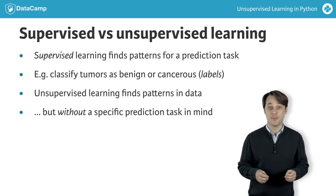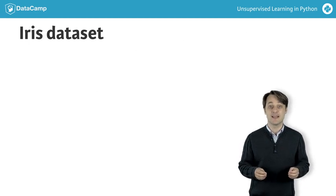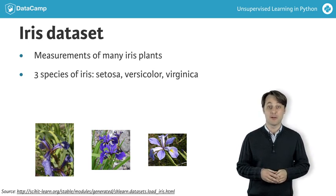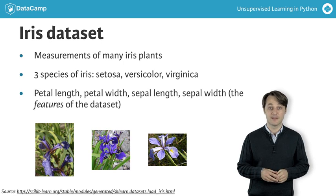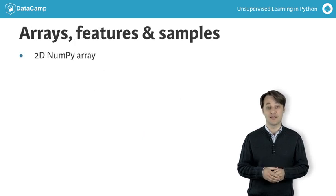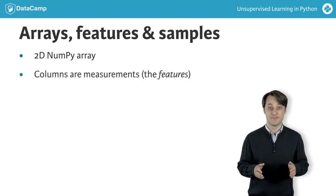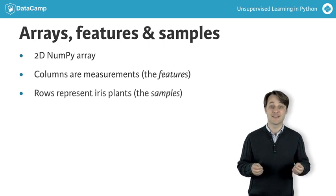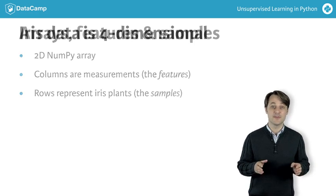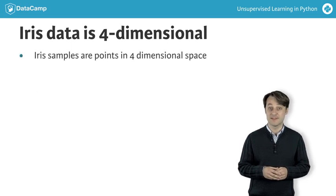You'll start by learning about clustering. But before we begin, let's introduce a dataset and fix some terminology. The iris dataset consists of the measurements of many iris plants from three different species. There are four different measurements: petal length, petal width, sepal length, and sepal width. These are the features of the dataset. Throughout this course, datasets like this will be written as two-dimensional numpy arrays. The columns of the array represent the features, and the measurements for the individual plants are the samples of the dataset, corresponding to the rows of the array. The samples of the iris dataset have four measurements and correspond to points in a four-dimensional space. This is the dimension of the dataset.